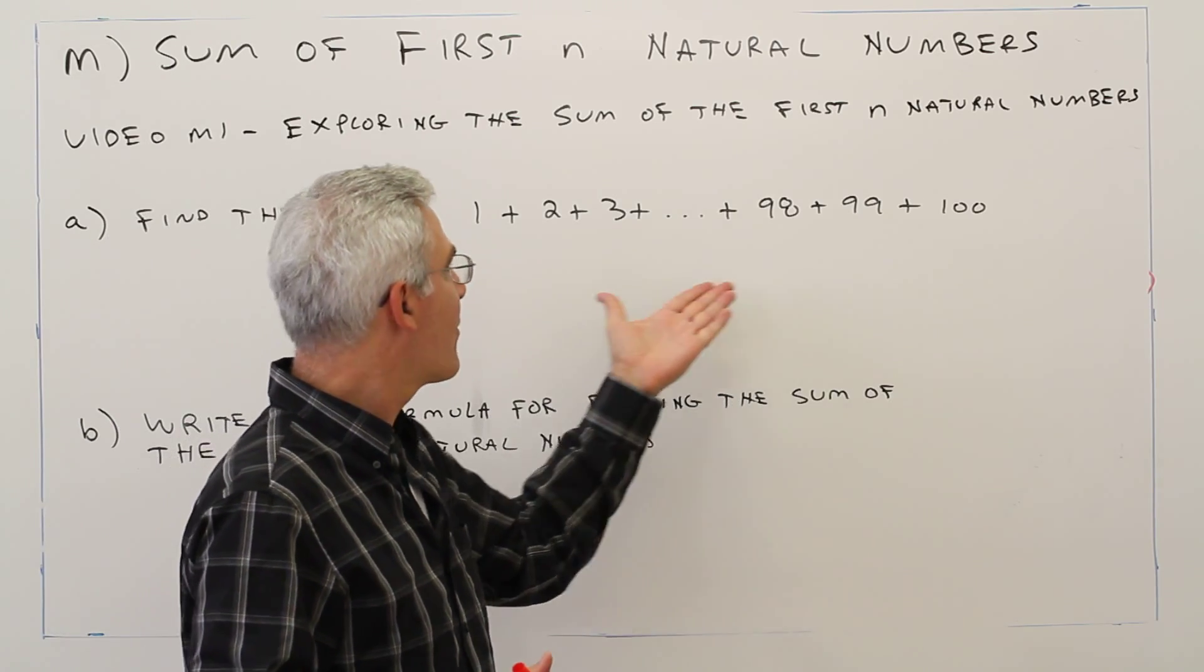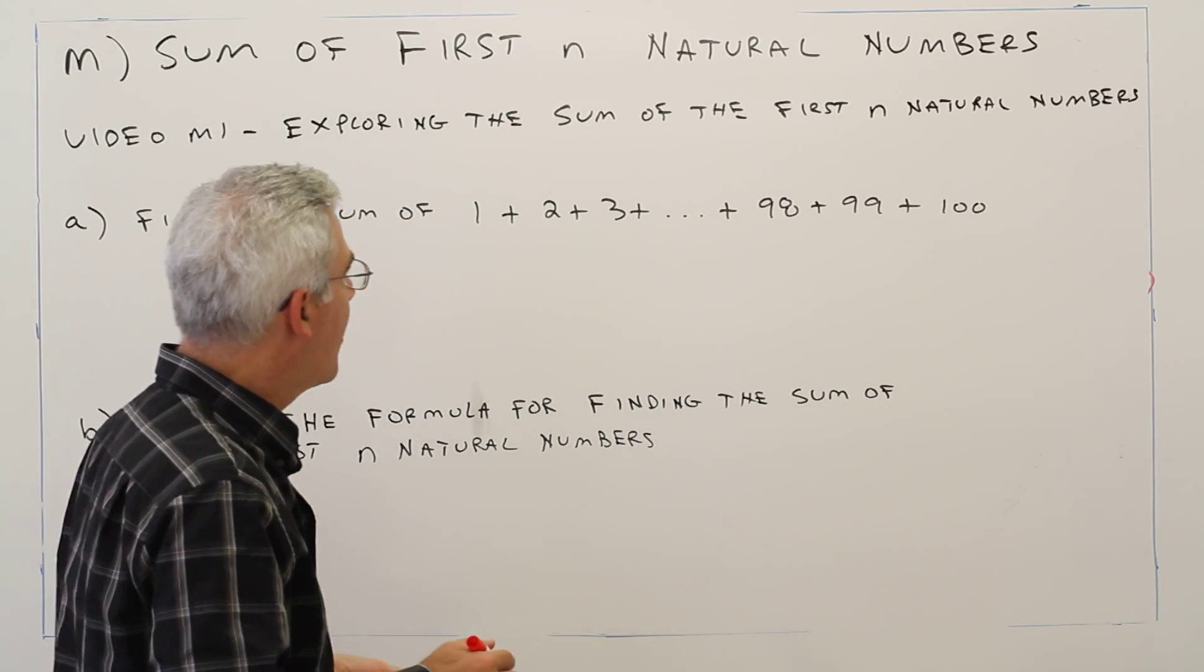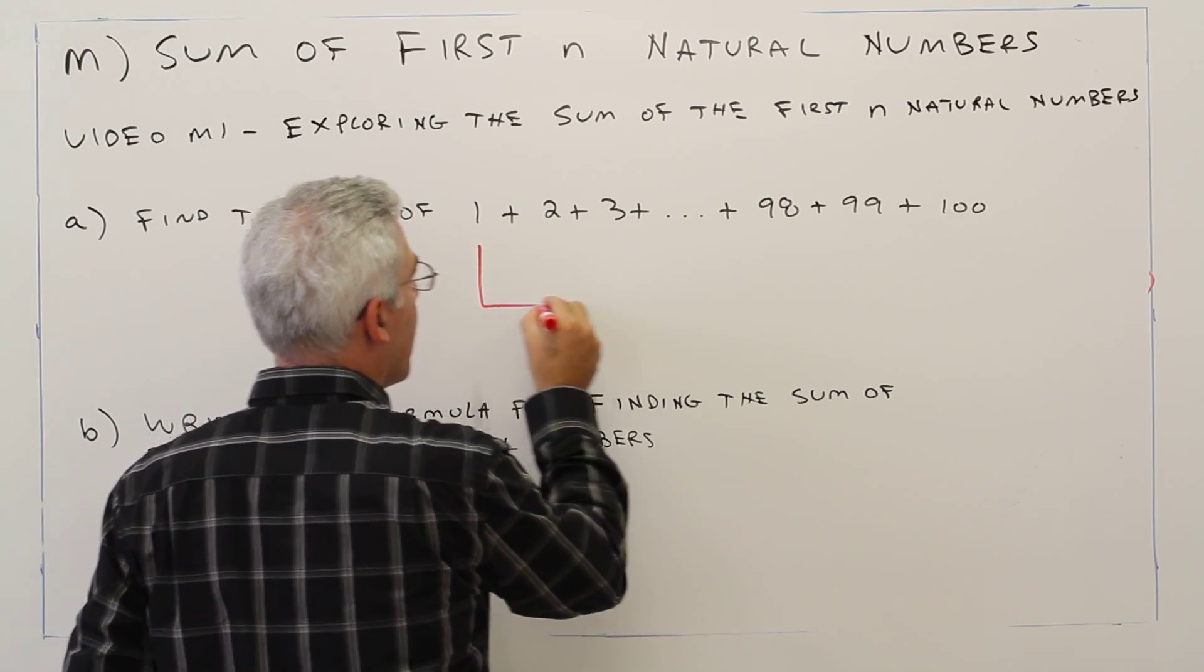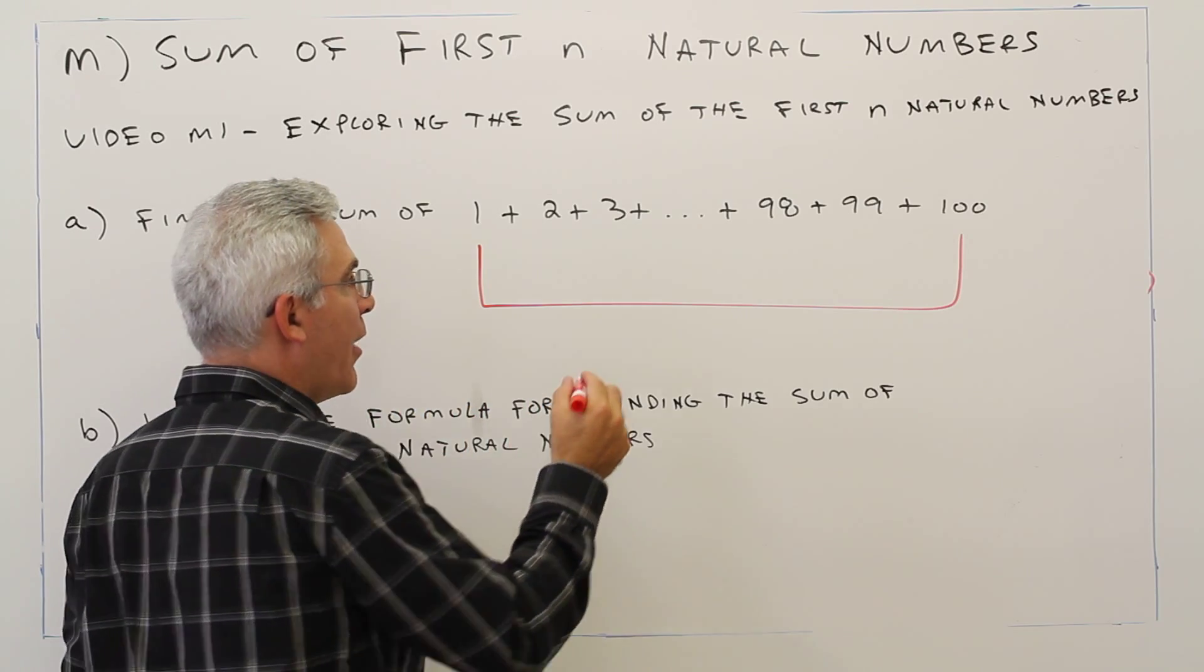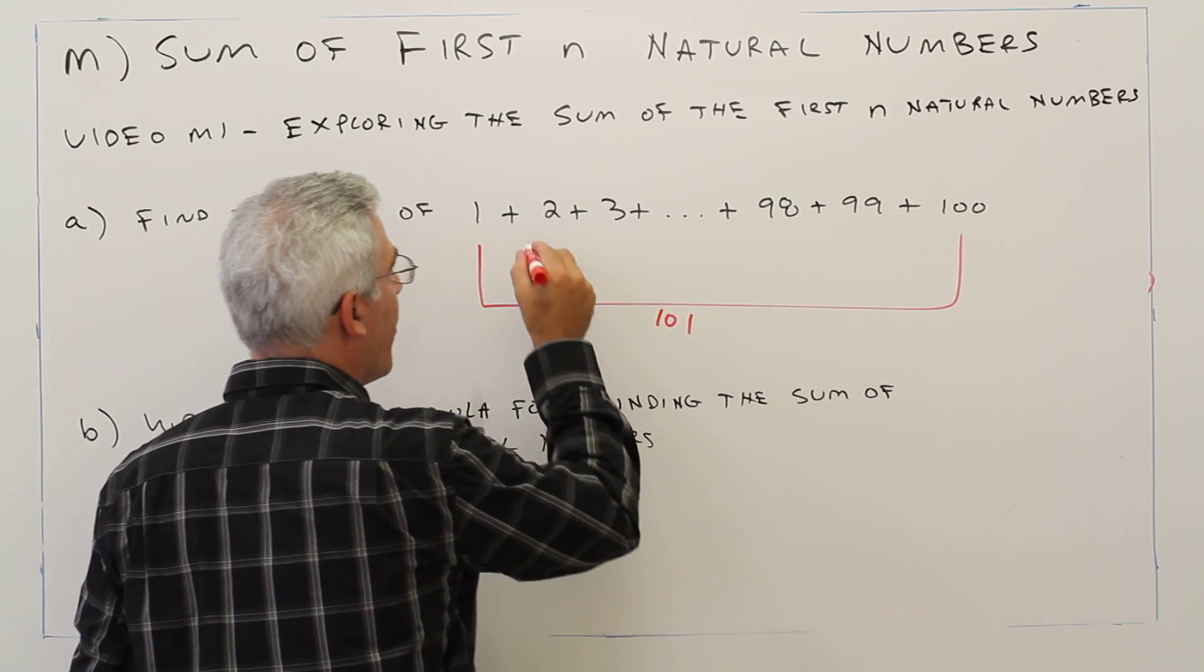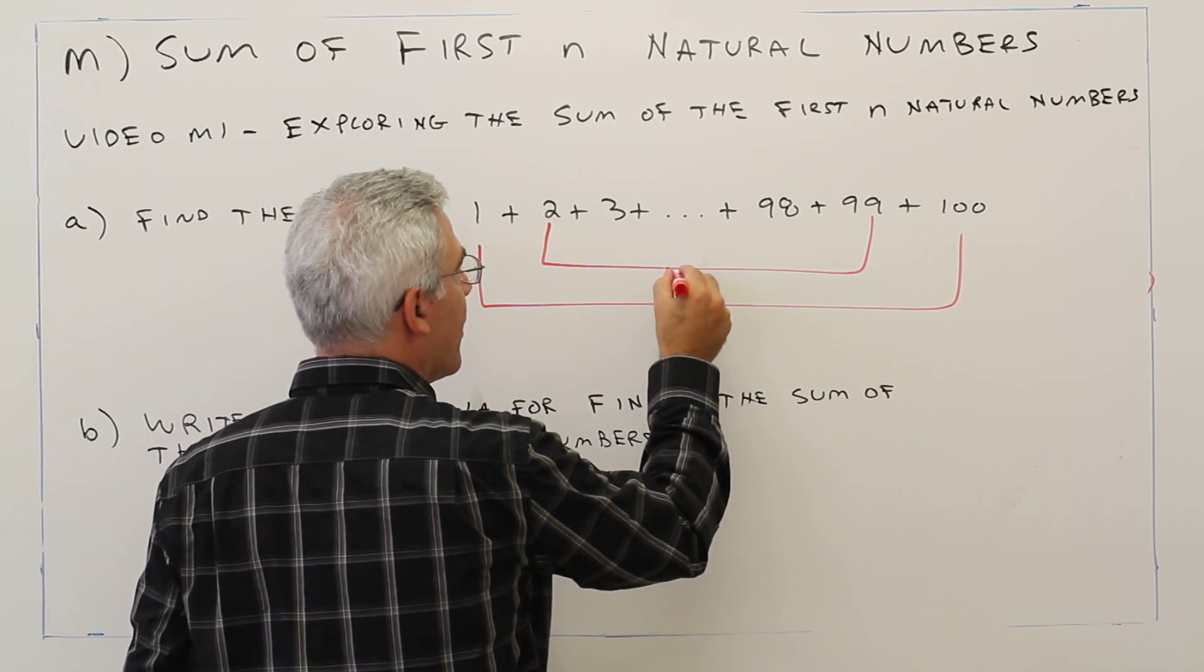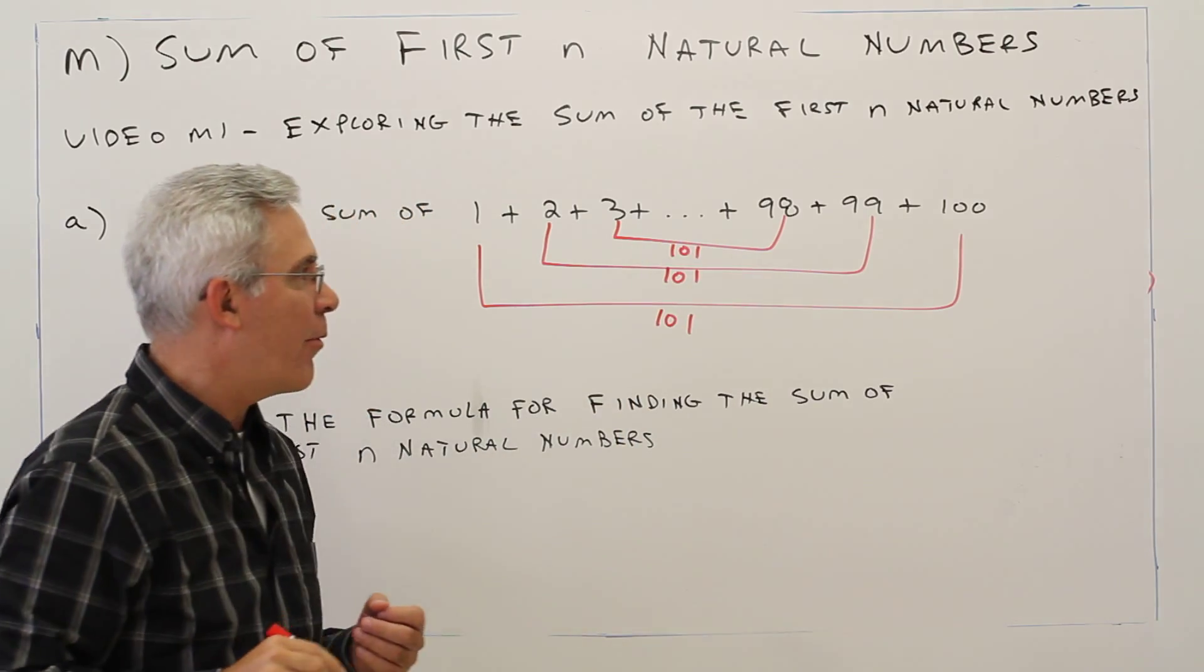And I kind of set it up a little bit easier for you to see. What Gauss did is he wrote the numbers this way and realized if he paired 1 and 100, he got 101. 2 and 99, he got 101. 3 and 98, he got 101.